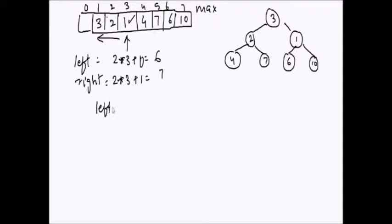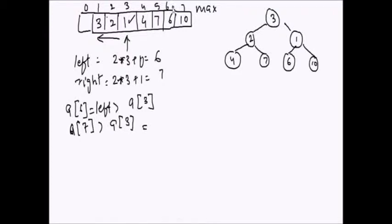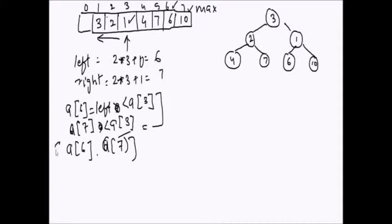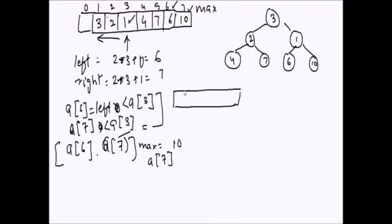We check whether a[6] and a[7] are less than the parent a[3], as required by the max heap property. Both children are greater than the parent, which violates the max heap property. We take the maximum of the left and right child — that is a[6] and a[7] — the max is 10, so a[7] is the max. We swap a[7] with a[3], and the input array is updated.